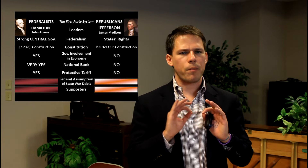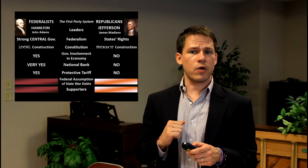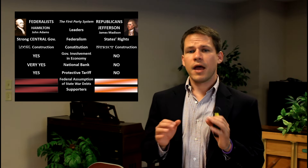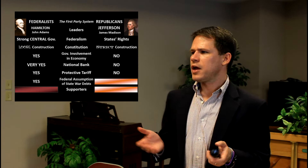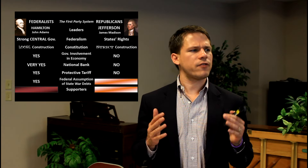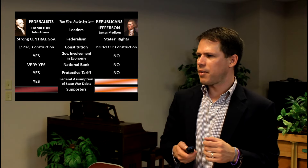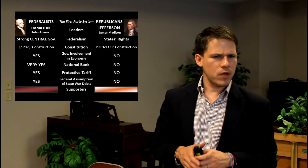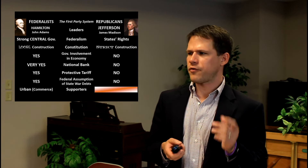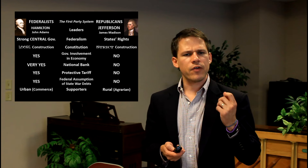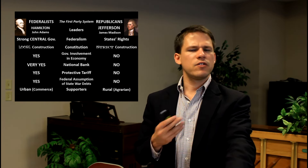Jefferson asked: where is a protective tariff in the Constitution, and how does that help farmers? The Jeffersonian Democratic Republicans were kind of the original party of no — a smaller central government that does not interact with the economy and interprets the Constitution very strictly. On federal assumption of state debts from the Revolution, Hamilton said yes, put it all in a common pot. Jeffersonians said no. Federalist supporters were urban people engaged in commerce, while farmers and rural people supported the Jeffersonian Democratic Republicans.